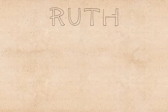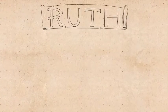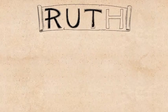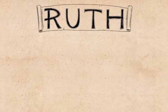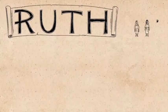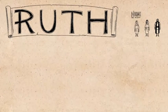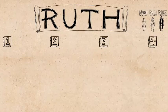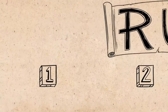The book of Ruth is a brilliant work of theological art and it invites us to reflect on the question of how God is involved in the day-to-day joys and hardships of our lives. There are three main characters in the book: Naomi the widow, Ruth the Moabite, and Boaz the Israelite farmer. Their story is told in four chapters that are beautifully designed. Let's dive in and see how this all unfolds.